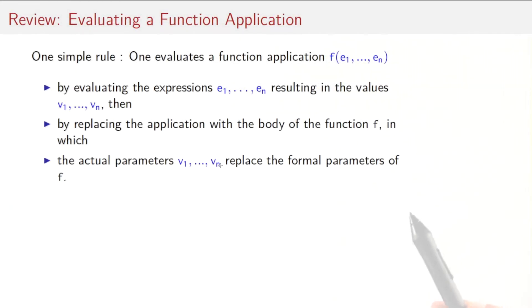First, let's review function application. You know from the last session that there is one simple rule. You evaluate a function application f applied to arguments e1 to en by evaluating the argument expressions e1 to en. They would result in the values v1 to vn. And then replacing the application of the function by its body, and at the same time replacing the formal parameters of the function by the actual arguments v1 to vn.